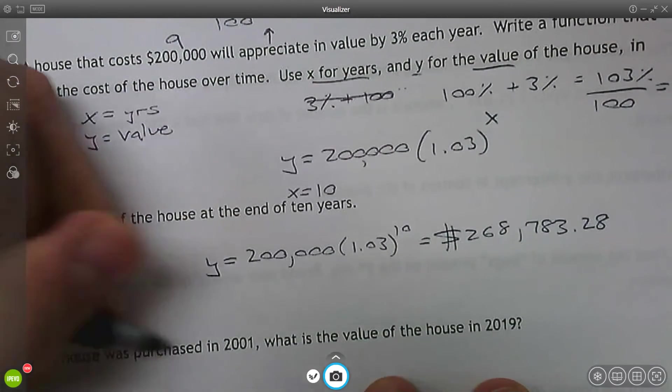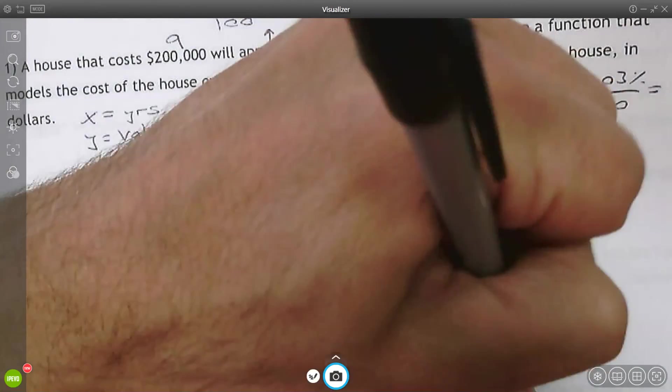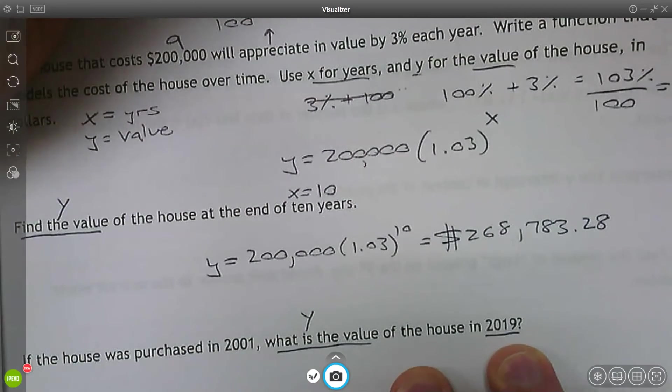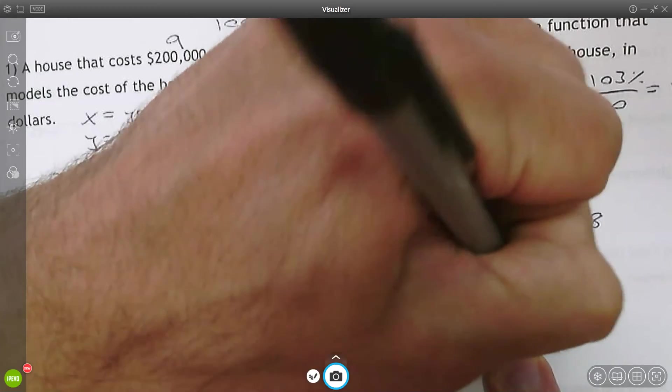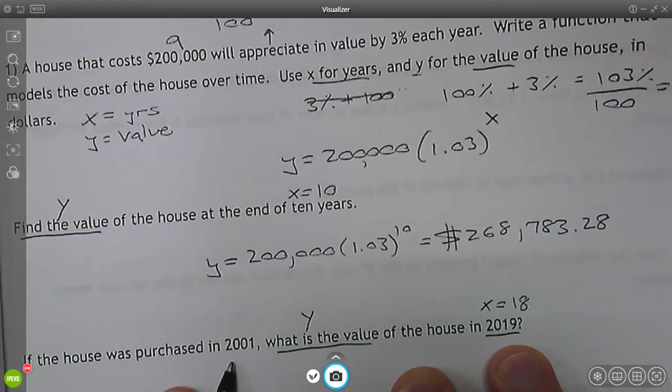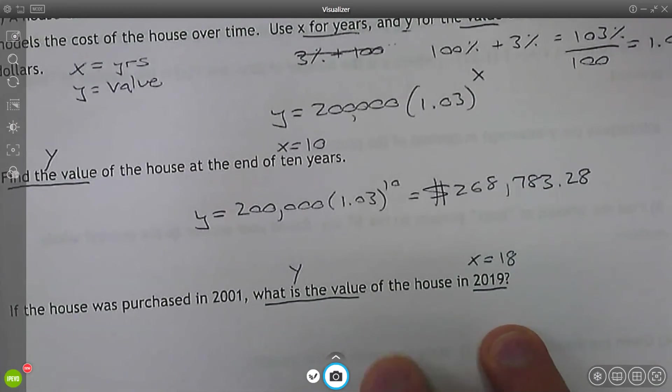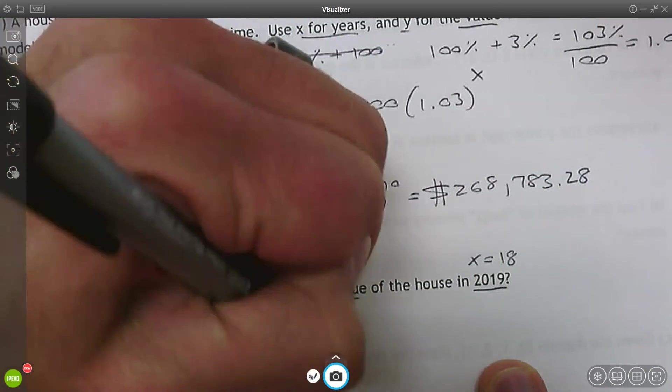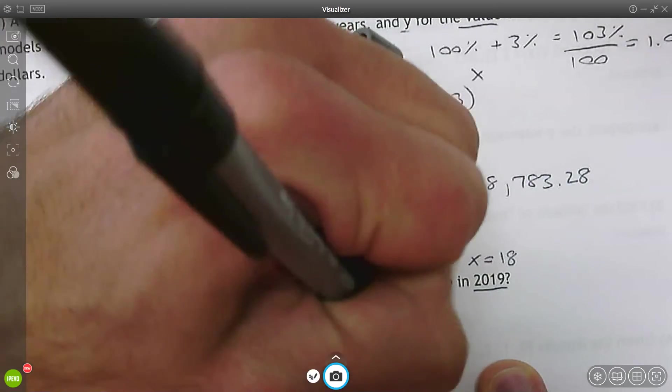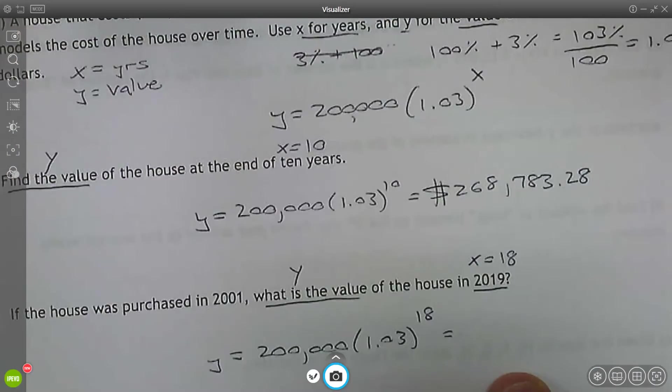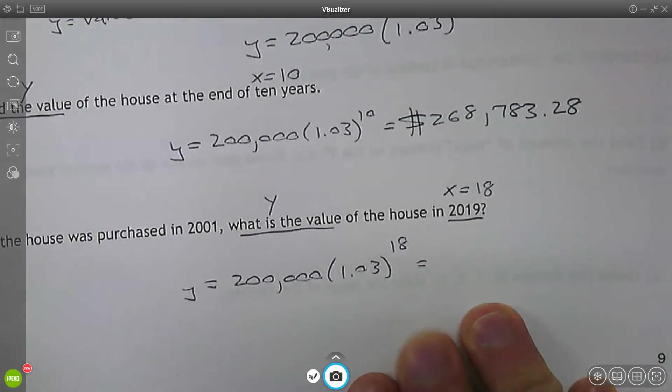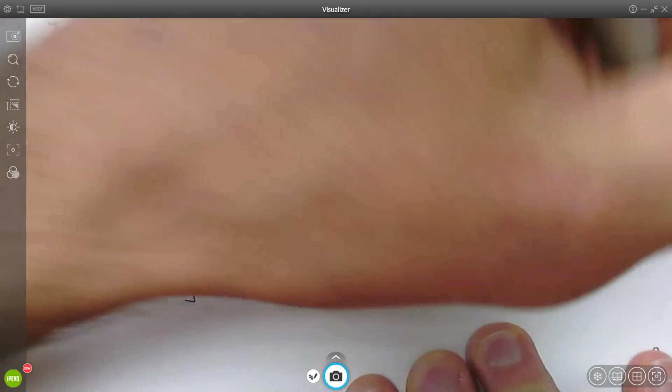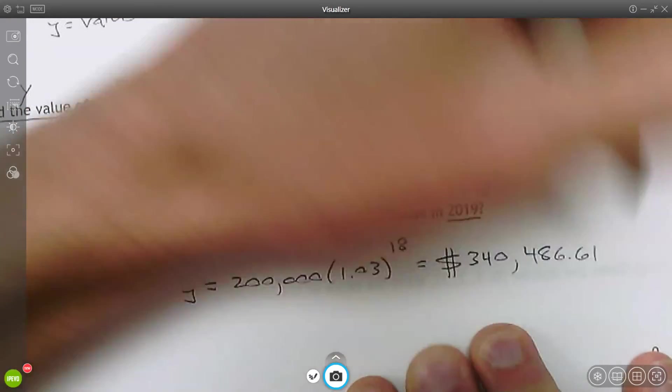The last part, if the house was purchased in 2001, what is the value of the house in 2019? So asking what is the value, we still want to find Y. In 2019, that's time in years. 18 years have passed from 2001 to 2019. So it's going to be similar to what we did in the previous example. Y equals 200,000 times 1.03. Now we're going to raise that to the 18th power. Plug that in the calculator and that's going to give us $340,486.61.